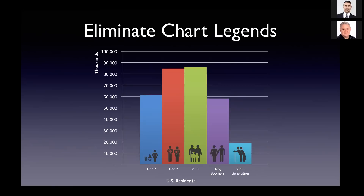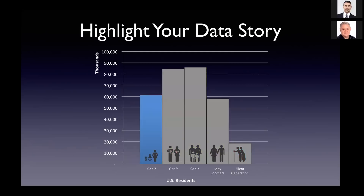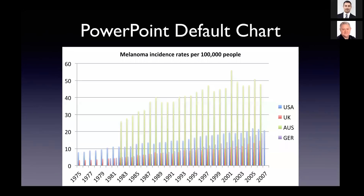Then we bring in that pre-attentive attribute of color. It's the same chart, but let's say my conclusion has something about Gen Z — Gen Z is now colored, and I put the rest of the bars in gray. They're still there, so you still see the total curve of the US population, but it's obvious to you, the audience, that what I'm talking about is this data about Gen Z. That's how we use pre-attentive attributes in data visualizations. It's all about simplify, simplify, simplify, and making it easier for your audience to understand what it is you're trying to communicate.